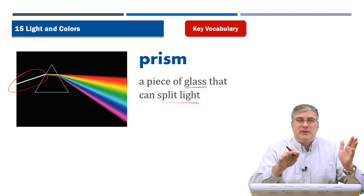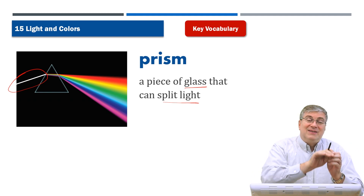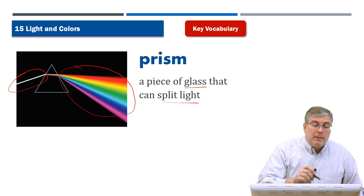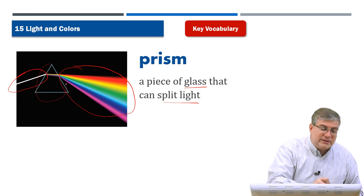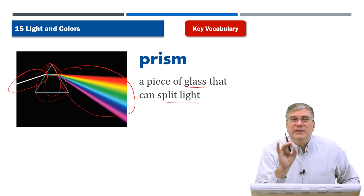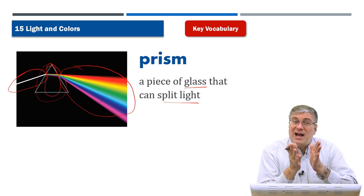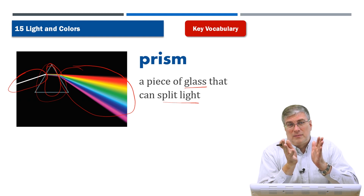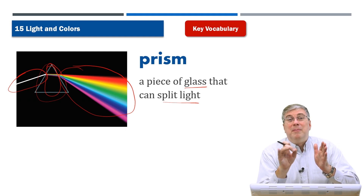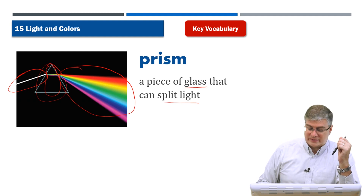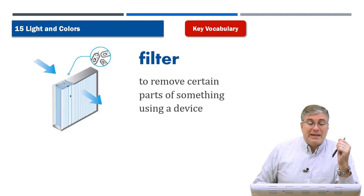That sunlight — the white light coming from the sun — gets split up into all these different colors. This piece of glass is acting as a prism, and a prism can split light, divide light up into its elements, into the more basic colors of sunlight. Okay, that's a prism.